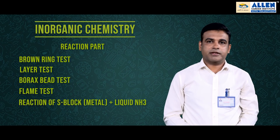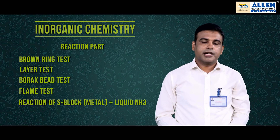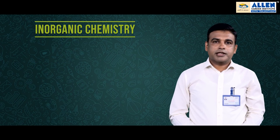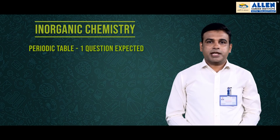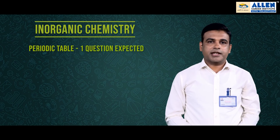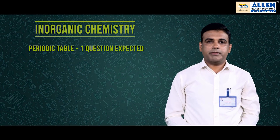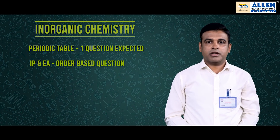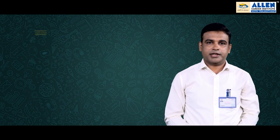In the Redox Reaction chapter and if we talk about the Periodic Table, there is also a question. In the Periodic Table, mainly IP (Ionization Potential) and EA (Electron Affinity) order-based questions are important.